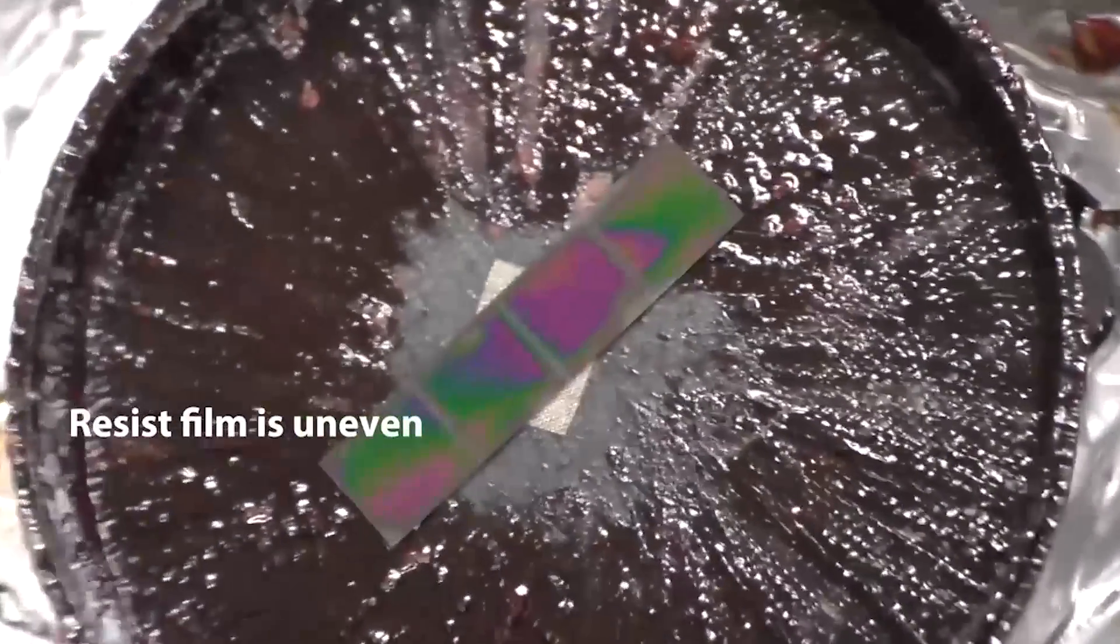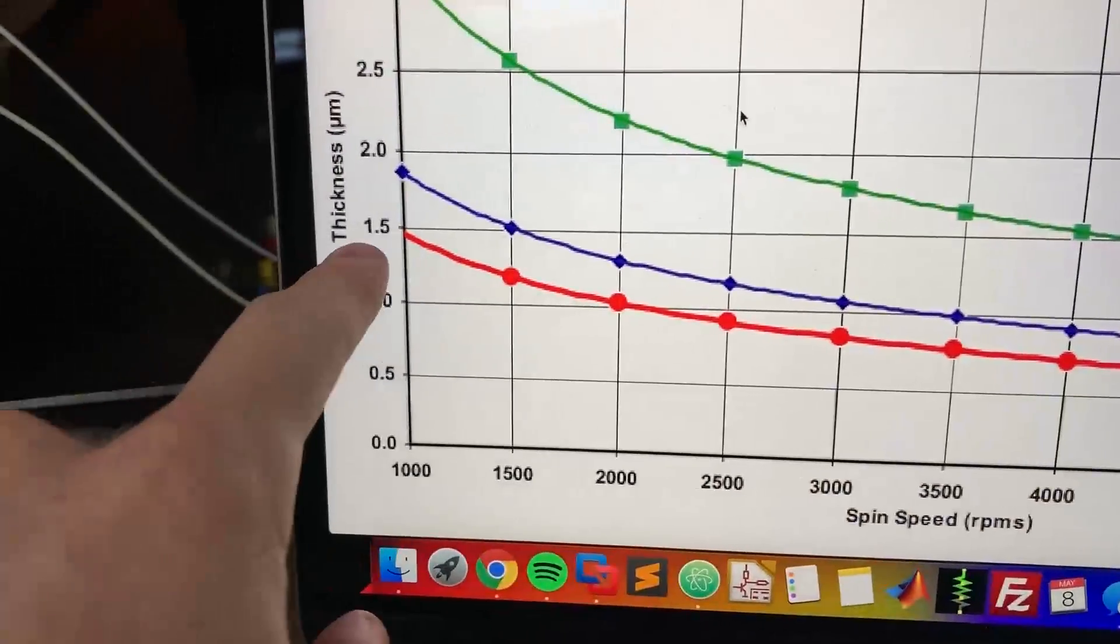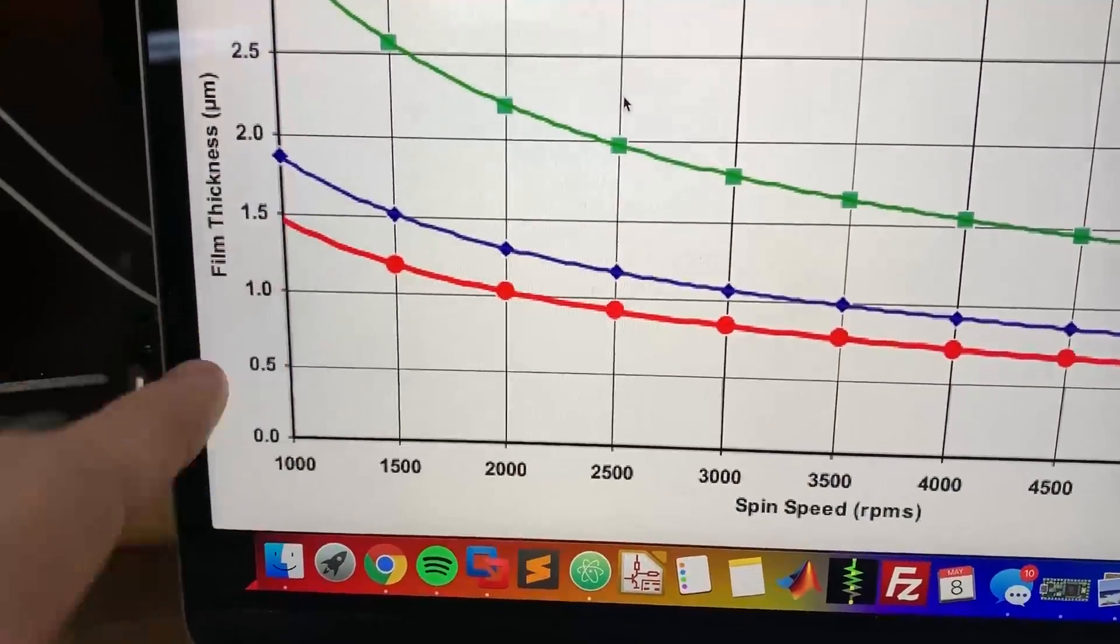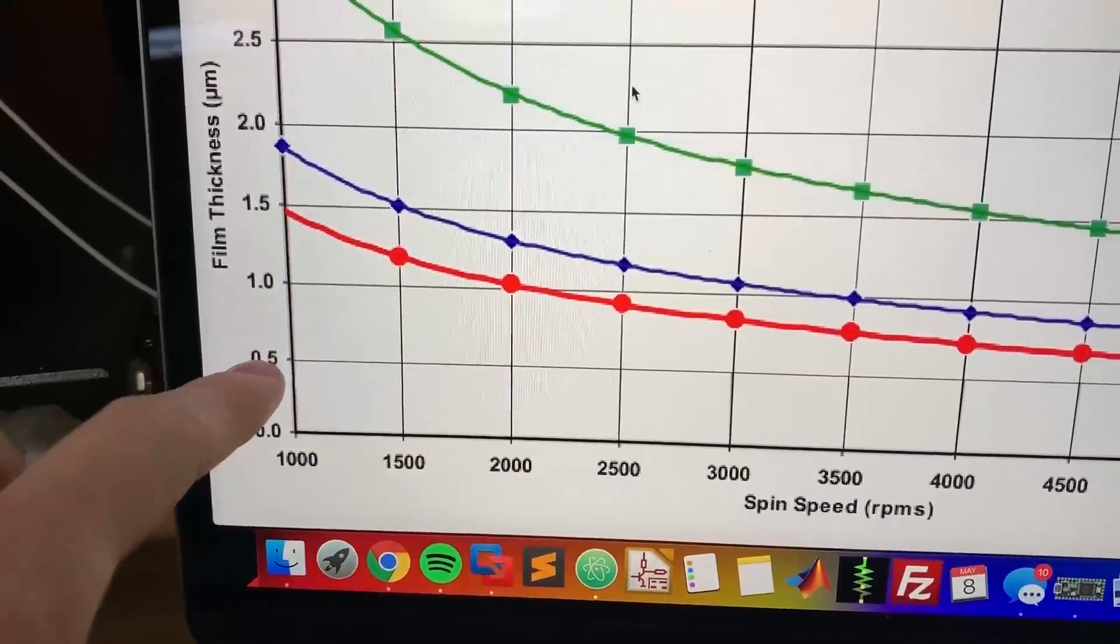In my case I was using this resist in red which is this trace spun at about 4000 rpm which gives a film of roughly speaking here 750 nanometers.